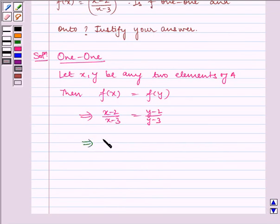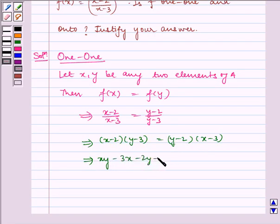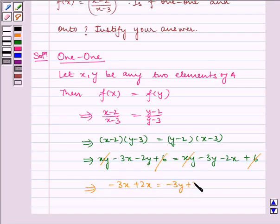Which implies (x minus 2) by (x minus 3) is equal to (y minus 2) by (y minus 3). Which implies (x minus 2) into (y minus 3) is equal to (y minus 2) into (x minus 3). Which implies xy minus 3x minus 2y plus 6 is equal to xy minus 3y minus 2x plus 6. Now, this gets cancelled and this also gets cancelled. So we are left with minus 3x plus 2x is equal to minus 3y plus 2y.